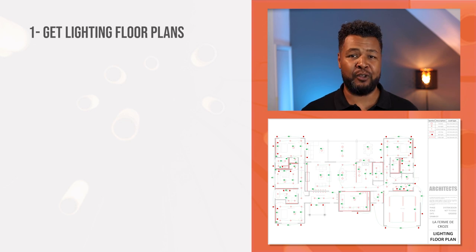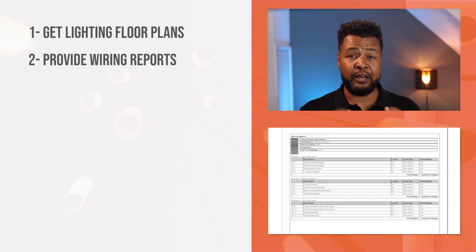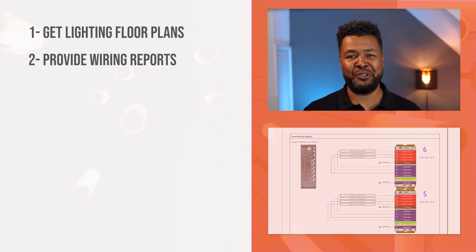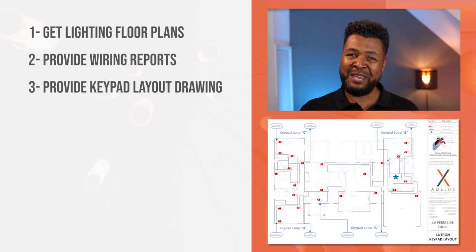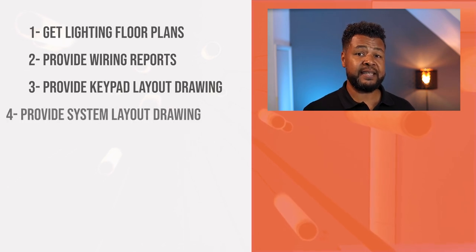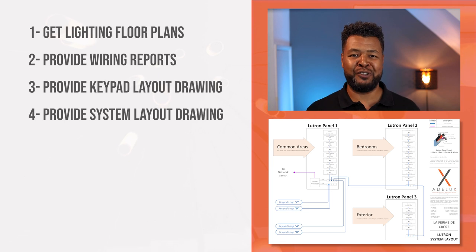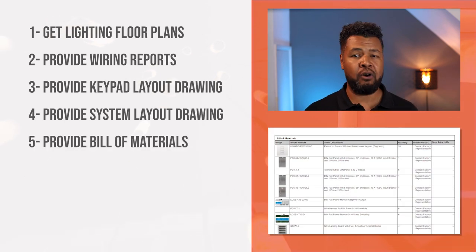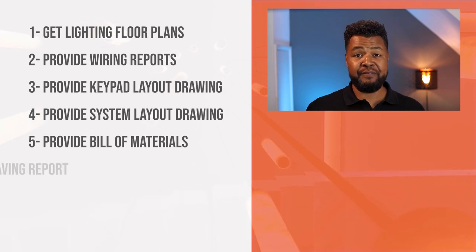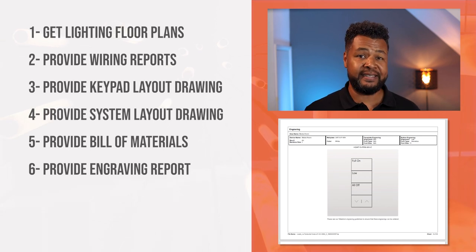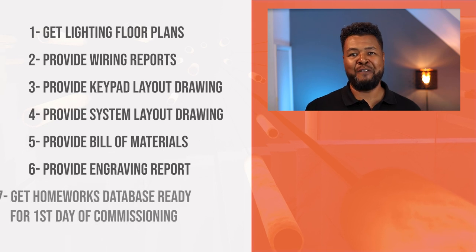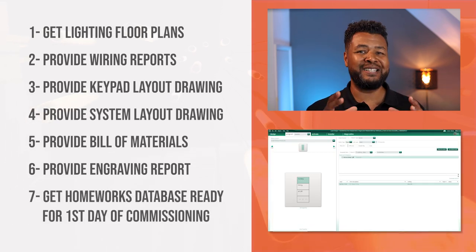That's how to design a Lutron Homeworks system. This process is to be used as guidelines, as each Lutron project is unique; however, those steps should remain sensibly the same: get the correct lighting documents and floor plans from the clients; provide wiring reports so the electrician can wire each lighting circuit on the correct module output; provide a keypad wiring layout drawing so keypads are wired and powered correctly; provide a system layout drawing to give everyone a clear overview; provide an accurate bill of materials and therefore an accurate cost for the Lutron equipment; provide the engraving report to get client approval; and most importantly, have a complete database ready for the first day of commissioning, which will save on programming costs.